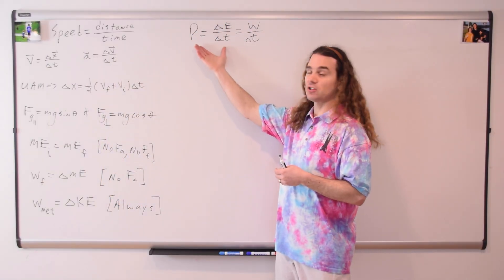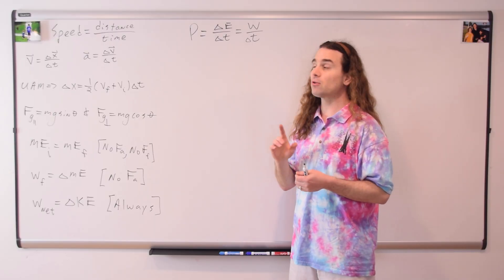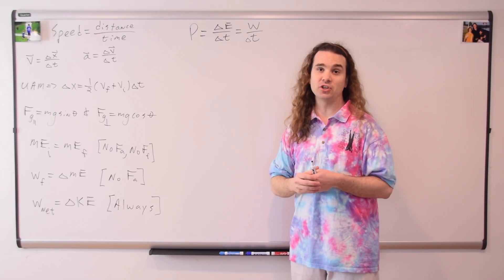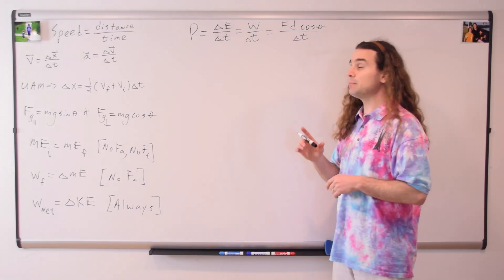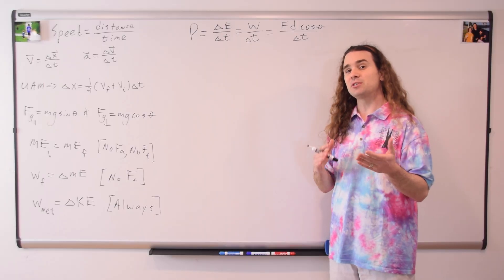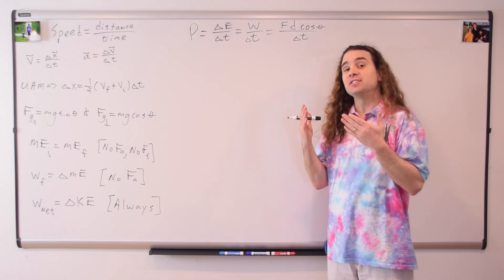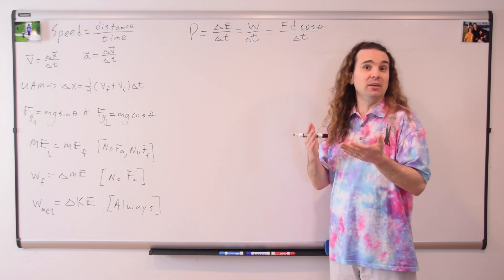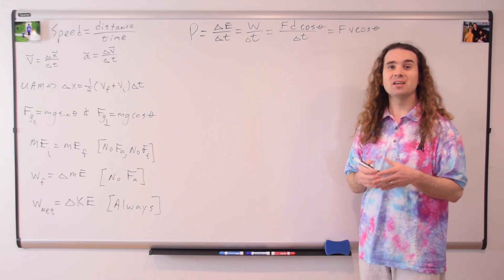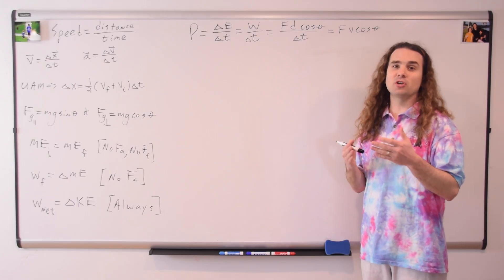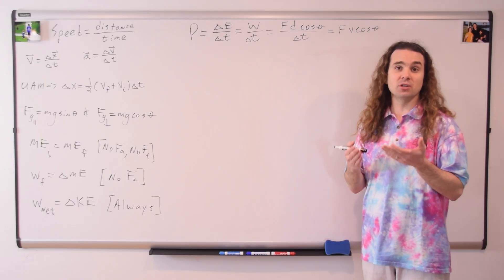Power equals the change in energy over change in time is on the equation sheet. However, it is also useful to remember that power equals work divided by change in time, which equals the force doing the work times the displacement times the cosine of the angle between the force and the displacement, all divided by change in time. And since displacement divided by change in time equals velocity, power also equals force times velocity times the cosine of the angle between the force and the velocity.